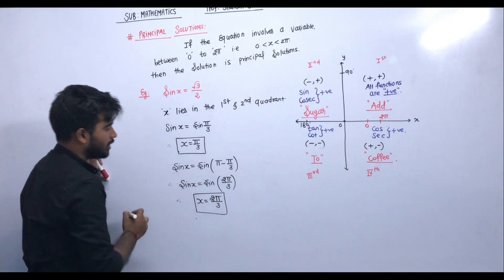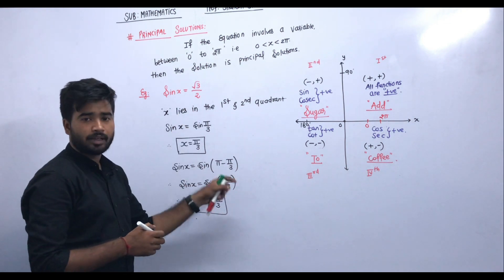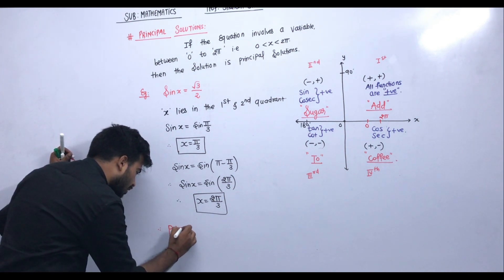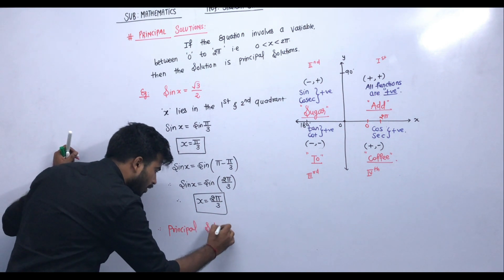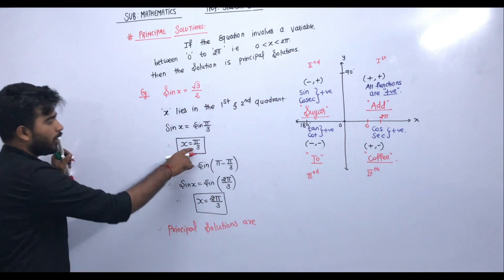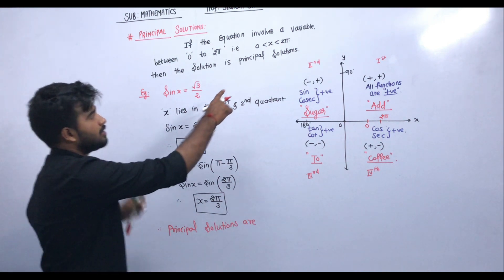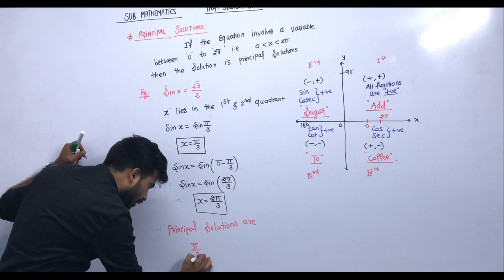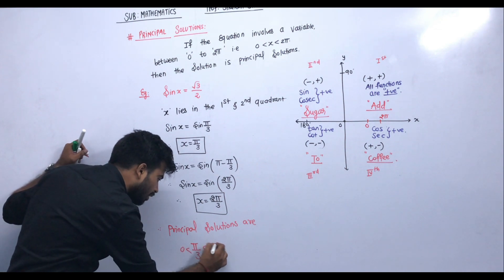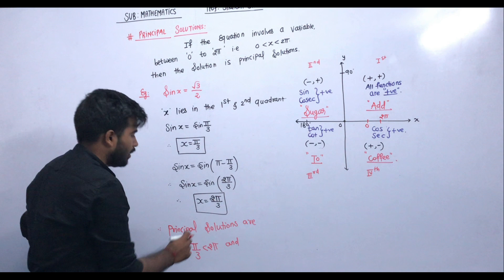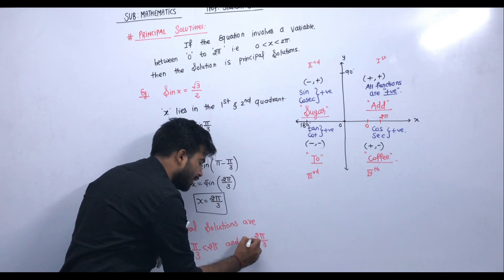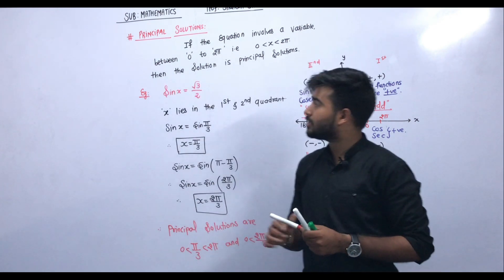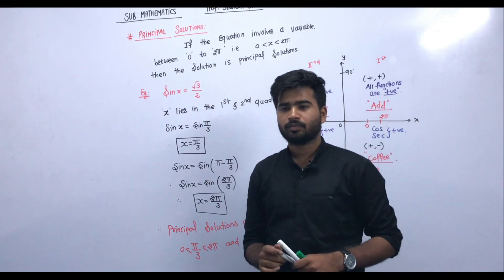The principal solution gives two values. Therefore, the principal solutions are x = π/3 and x = 2π/3. Both satisfy 0 < x < 2π. This is how the principal solution is calculated. Thank you students.